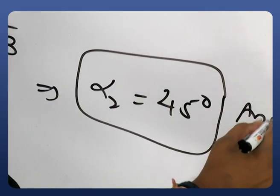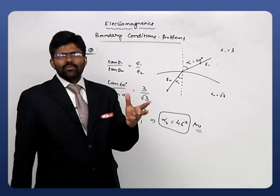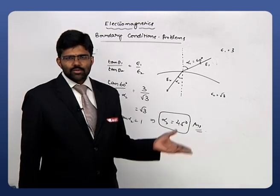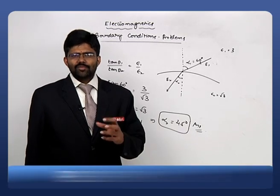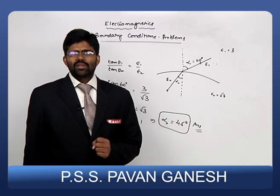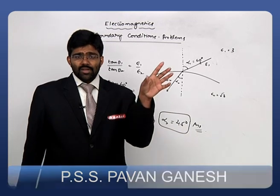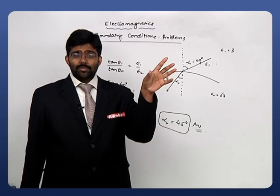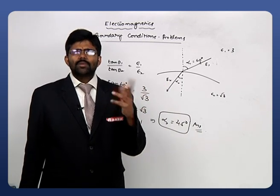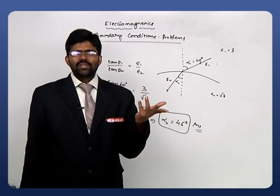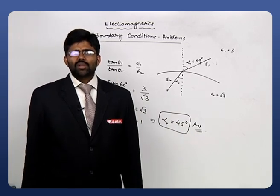The answer is α₂ = 45°. If you know the law of refraction for electric fields, these problems are straightforward. Different boundary condition problems depend on the relations between tangential and normal components for both electric and magnetic fields, which must be remembered.